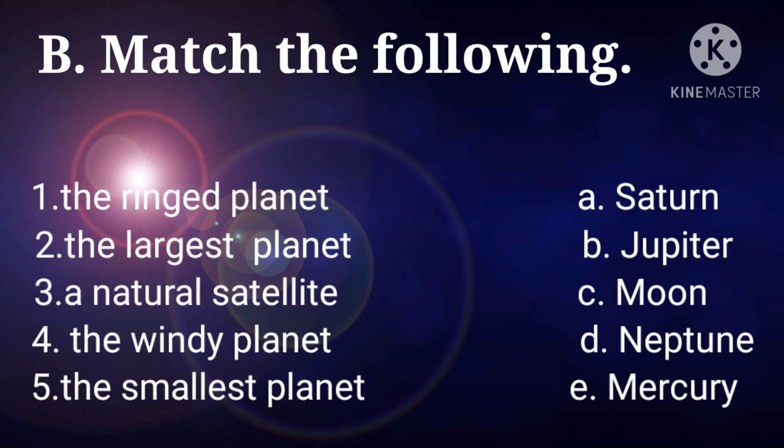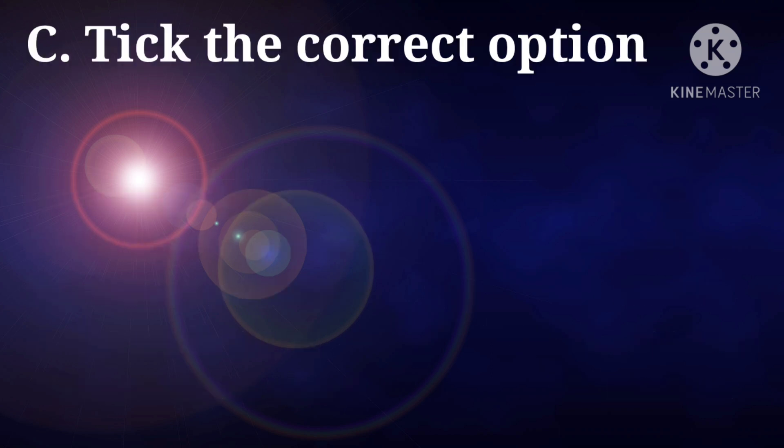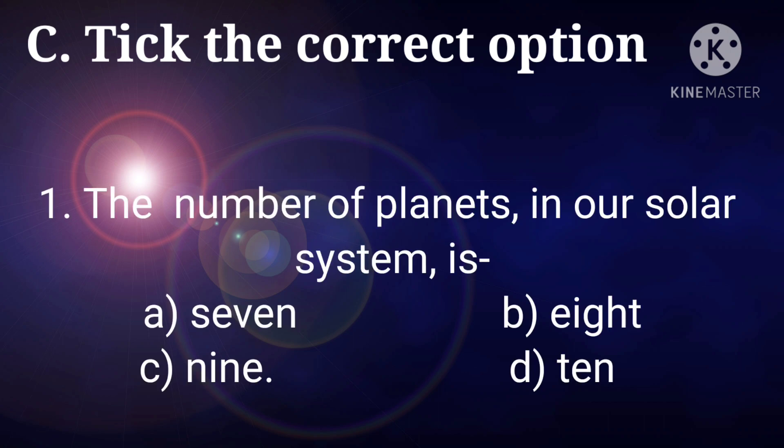So let's start the next part. Tick the correct option. Here, out of given options, we have to tick the correct one. First statement is, the number of planets in our solar system is, options are 7, 8, 9, 10. Correct option is option B, 8.